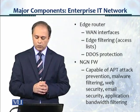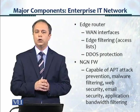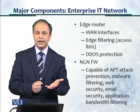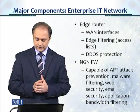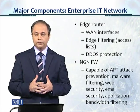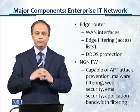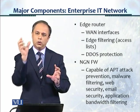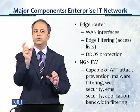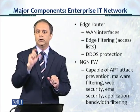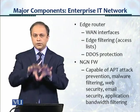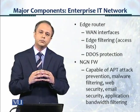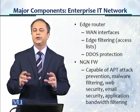Then you have the next generation firewall, which performs some very important functions. It is capable of prevention of APT attacks — advanced persistent threat attacks — preventing malware, and it does filtering. It implements web security, email security, and application bandwidth filtering. It categorizes all application flows so you can control how much bandwidth, speed, and latency you want for each particular application. The next generation firewall has now become synonymous with the functionality of a UTM, or unified threat management device.